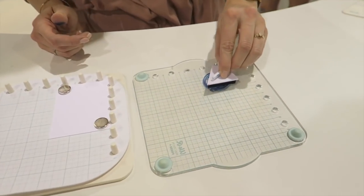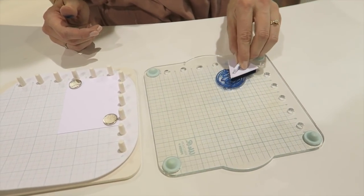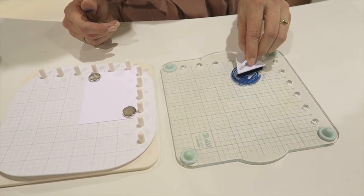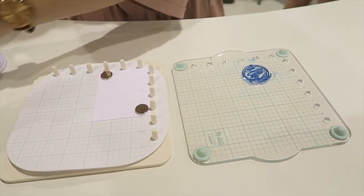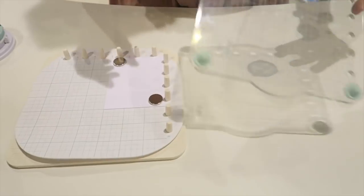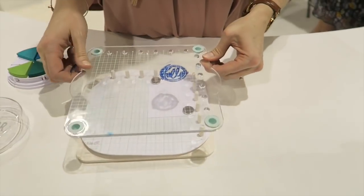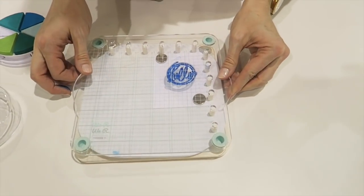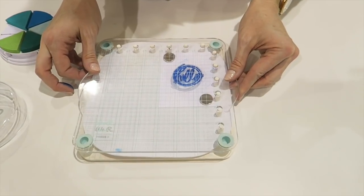So we're just going to add our ink to the stamp. And these are the Vicki Booten inks and stamps. And then we'll line this up on the pegs so that your stamp is exactly placed right where it needs to be.